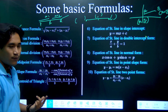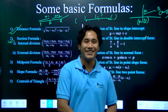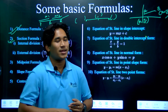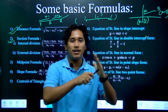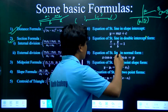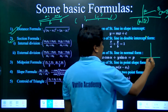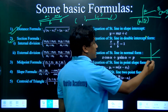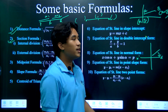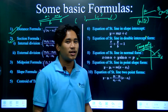Then we have the slope formula. We can calculate the slope using M1 or M2. The slope relates to the angle the line makes with the x-axis. If you look at the line on the x-axis, it is the slope.